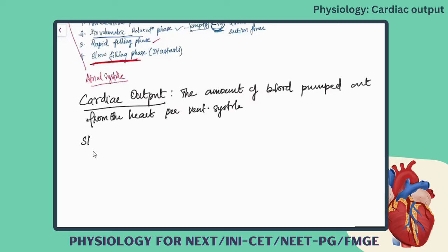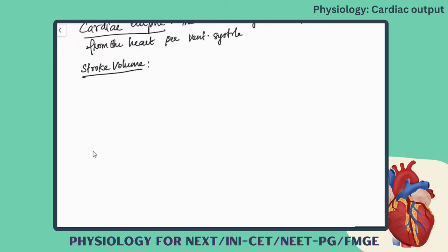Next we have stroke volume. Stroke volume is defined as the volume of blood ejected per beat. That is stroke volume.